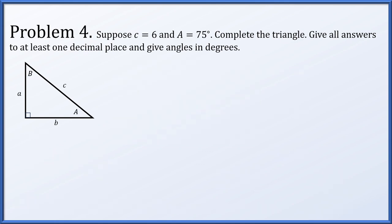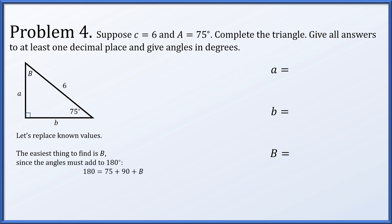In problem 4, suppose the hypotenuse c is 6 and angle A is 75 degrees, let's complete the triangle. So we are missing two sides and one angle. Let's replace our known values with angle A being 75 degrees and the hypotenuse being length 6. Still, the easiest thing to do is find the single missing angle. Because the angles of a triangle add up to 180 degrees, we quickly solve that angle B must be 15 degrees.